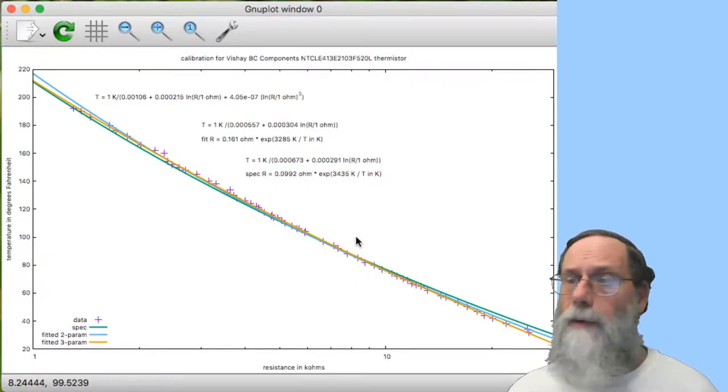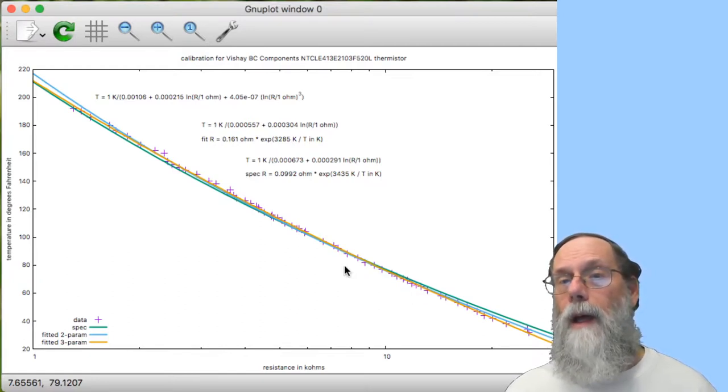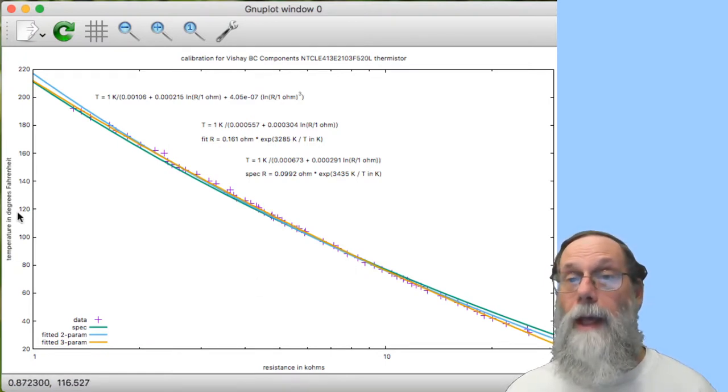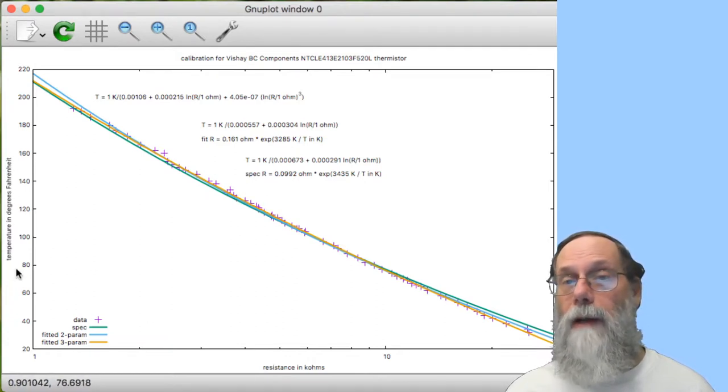So that's really all I need to cover at this point in model fitting. We'll be doing much more complicated models later on, and ones where the data is not so smooth, and where you possibly have more data from more automated data collection. For your own work, the main things that you're going to have to do differently is you're going to be having your resistance, possibly in ohms, possibly in kilo-ohms, depending on how you collect the data and what you put in your file. And you're going to have temperature in degrees Celsius, not Fahrenheit. And so you have to modify the script to handle that correctly.